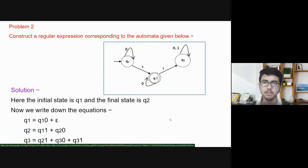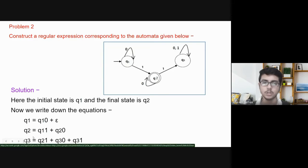Now let us see another example. Another automaton is given and we have to find its regular expression. In this case, the initial state is Q1 and the final state is Q2. We have to write three equations for three states. For Q1, there is only one incoming edge from Q1 itself with input alphabet 0. So, the equation of Q1 is: Q1 = Q1·0 + ε, because it is the initial state. For Q2, there are two incoming edges: one from Q1 and another from Q2 itself. So, the equation of Q2 is: Q2 = Q1·1 + Q2·0. The equation of Q3 is: Q3 = Q2·1 + Q3·0 + Q3·1.